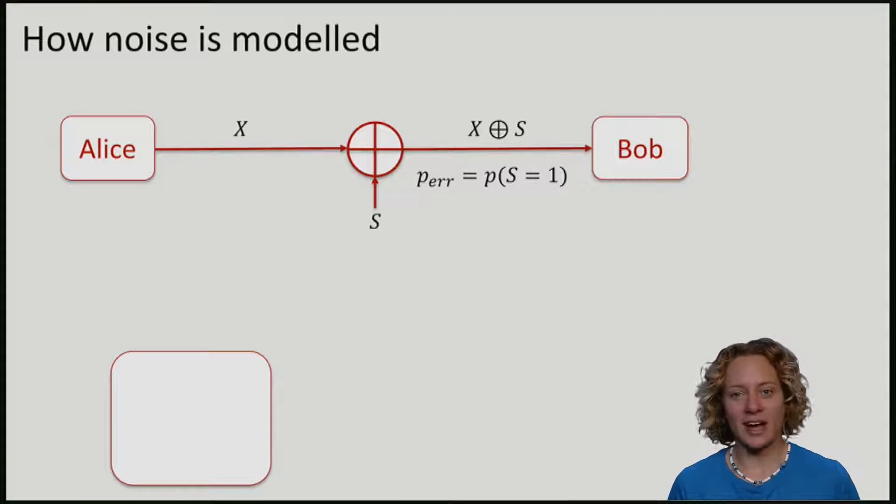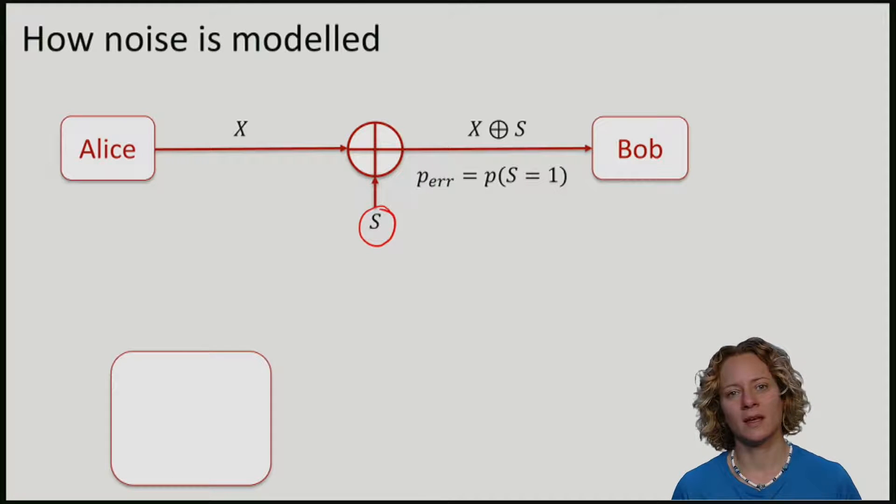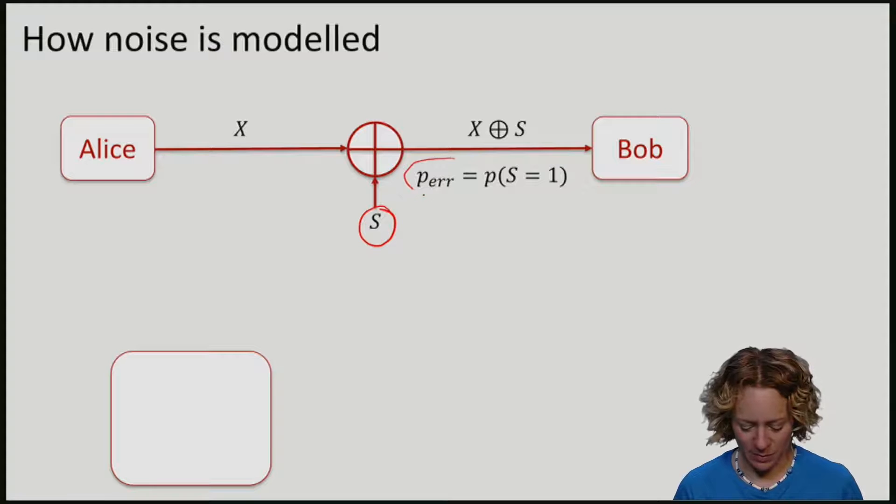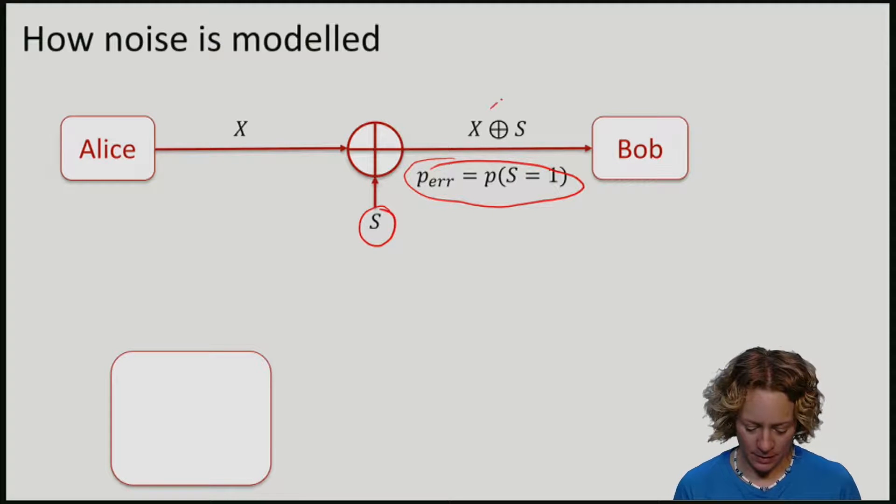This means that if Alice sends a bit x to Bob, you can imagine that the bit gets XORed with another bit, which here I will call s. s takes the value 1 with a probability p_err. So what Bob receives is not x, but x plus s mod 2.